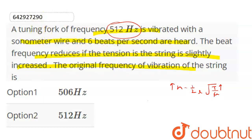So, the sonometer wire frequency could be 518 or 506. Now, we will decide if it's 518 or 506. The tension is increased, so the frequency is increased.